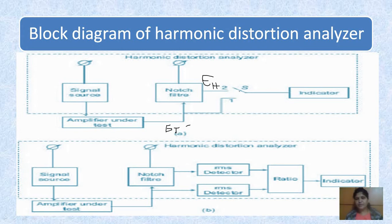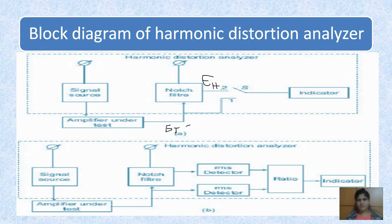There is a manual switch. If you want to find the total distortion — that is fundamental plus harmonics — connect to switch position one. If you want only the harmonics, connect to switch position two, and the indicator will display the result. Switch position one gives the total amplitude ET, and switch position two gives the amplitude of the harmonics EH.